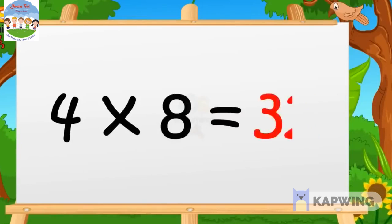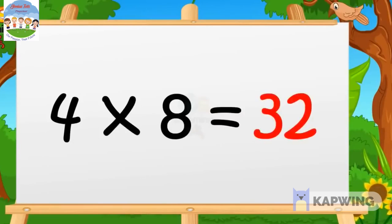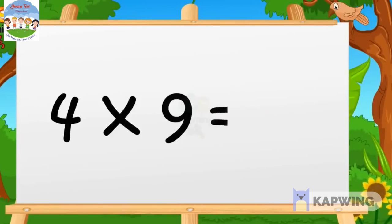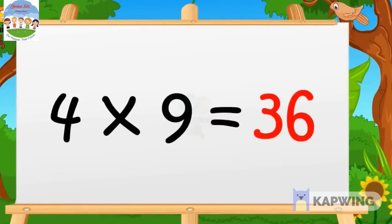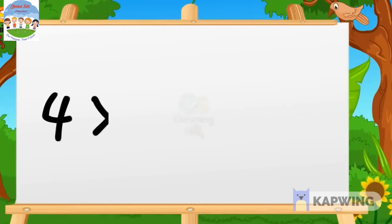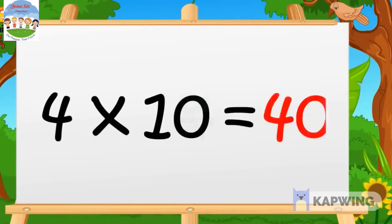4 eights are 32, 4 eights are 32. 4 nines are 36, 4 nines are 36. 4 tens are 40, 4 tens are 40.